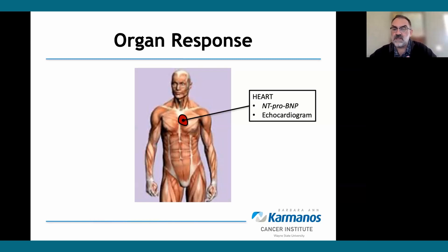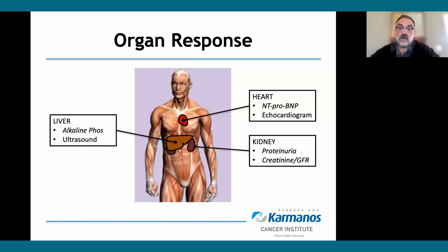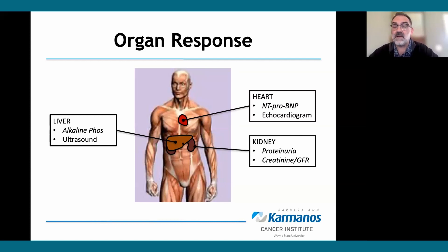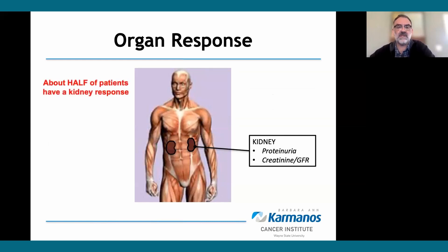We also have imperfect ways of assessing how organs are responding to treatment. For heart involvement, we look at blood markers like NT-proBNP or imaging like echocardiography. With the liver, we follow alkaline phosphatase. With the kidneys, we measure the degree of protein leaking per day and the glomerular filtration rate derived from serum creatinine. We're looking for reduction in proteinuria without further decline in filtration rate. With best available therapy, 50 to 60% of patients will have a kidney response.